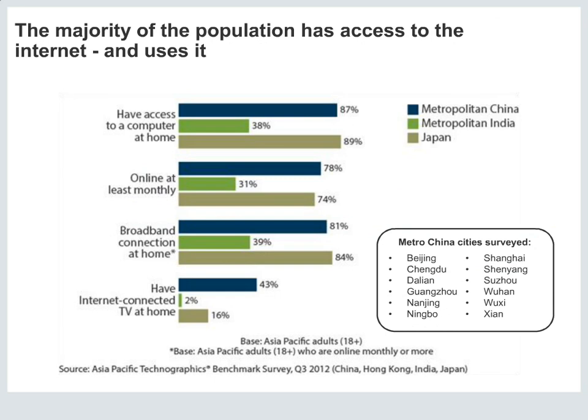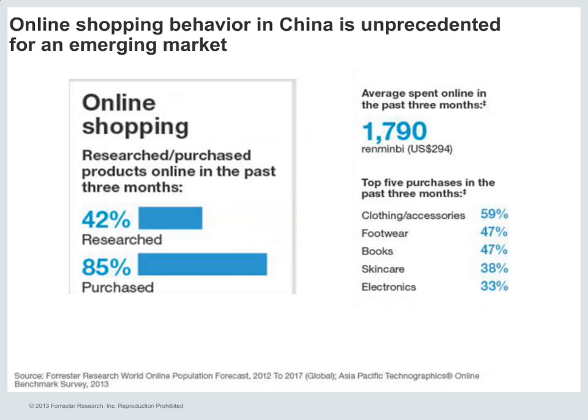The majority of the population has access to the Internet and they're also using it. 78% of online users in metropolitan areas are using the Internet at least monthly, and 80% in metropolitan areas have broadband connection at home — which is vastly different from a market like India, for example. Online shopping habits in China are absolutely unprecedented for what Forrester would still consider an ascending market.